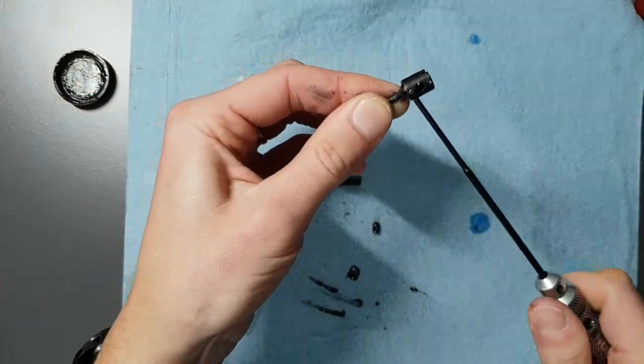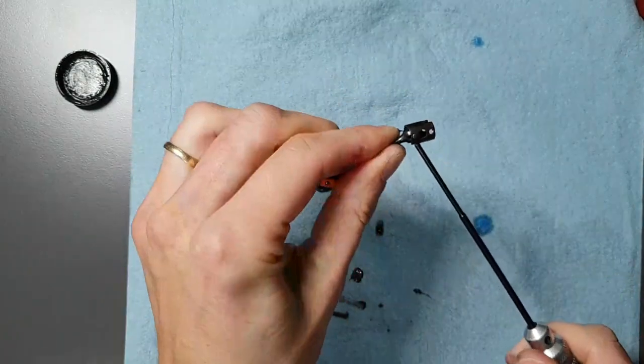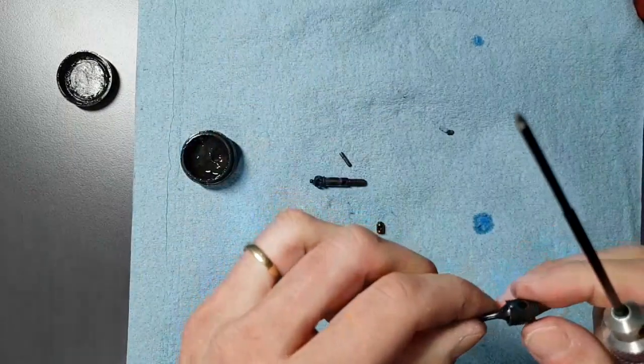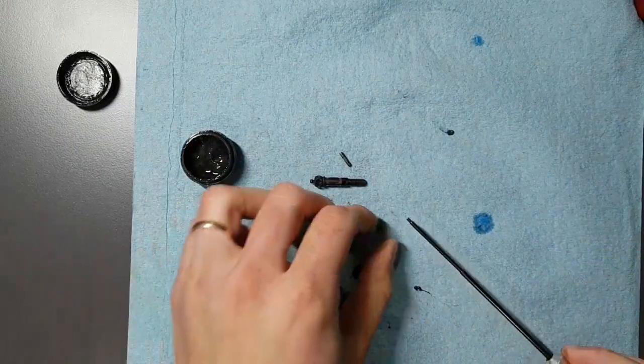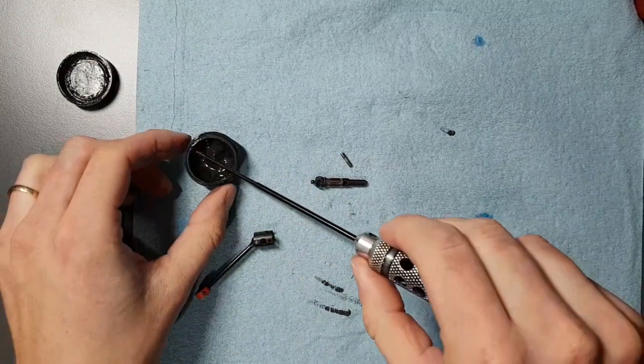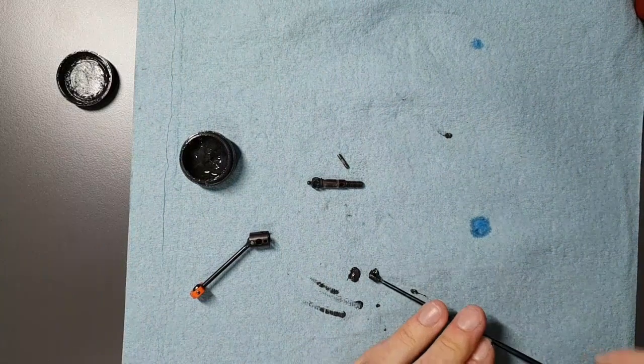It's important to tighten the set screw onto the flat spot of the pin as hard as you can, without breaking it. Clean it off a little. Next one. Again, I apply a liberal amount of grease onto the coupling. Not too much. Insert it.